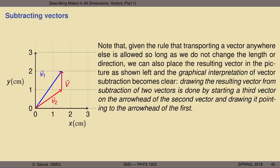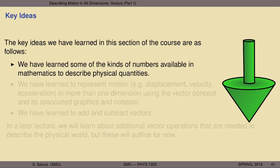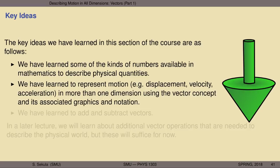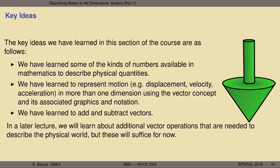Let's review the key ideas from part one of this lecture on vectors. We have learned about the kinds of numbers available in mathematics to describe physical quantities — scalars, vectors, tensors, and Grassmann numbers. We have learned to represent motion — displacement, velocity, and acceleration — in more than one dimension using the vector concept, with both graphical and mathematical notation. As a first foray into using vectors, we have learned to add and subtract vectors both graphically and mathematically. In a later lecture (part two), we will learn additional vector operations needed to describe the physical world.